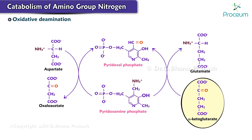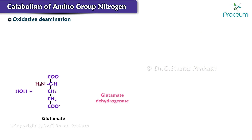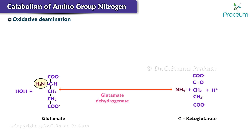Next, oxidative deamination: alpha ketoglutarate collects amino groups from amino acids in transamination reactions to form glutamate, and mitochondrial glutamate dehydrogenase catalyzes oxidative deamination of glutamate to release the ammonium ion (NH4+) and alpha ketoglutarate. In most cells, the reaction catalyzed by mitochondrial glutamate dehydrogenase is readily reversible — it releases the ammonium ion from glutamate, or it can incorporate the ammonium ion into alpha ketoglutarate to form glutamate.